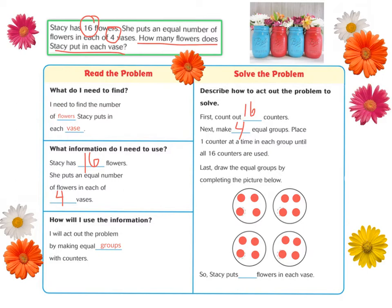So, Stacey puts four flowers in each vase. I know this because there are four counters in each of my circles.